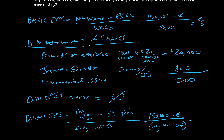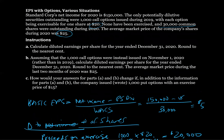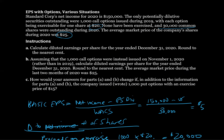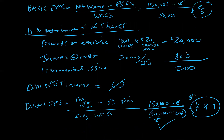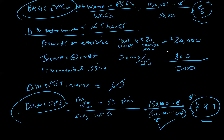This incremental share addition also has to be weighted by the period of time outstanding. For Part A, we assume these options are exercised at the beginning of the year, so the 200 shares are outstanding for the full year. The diluted earnings per share works out to $4.97. Our diluted EPS ($4.97) is lower than our basic EPS ($5), confirming it is dilutive, so we show both: diluted EPS at $4.97 and basic EPS at $5.